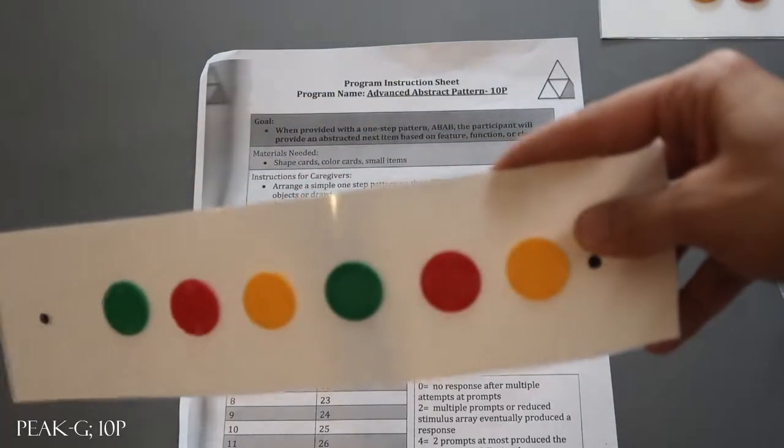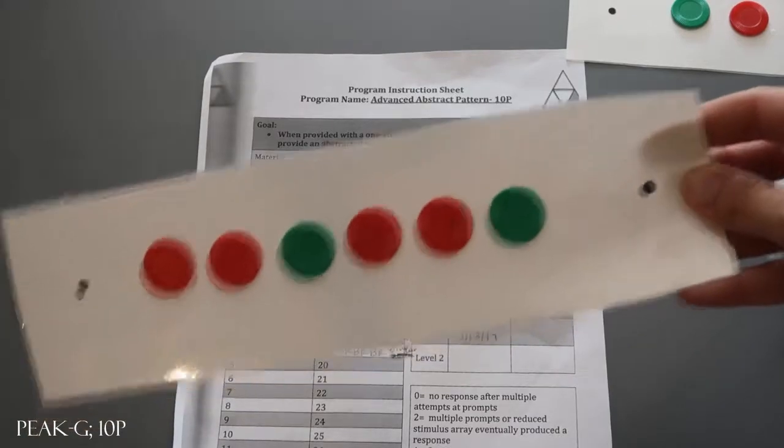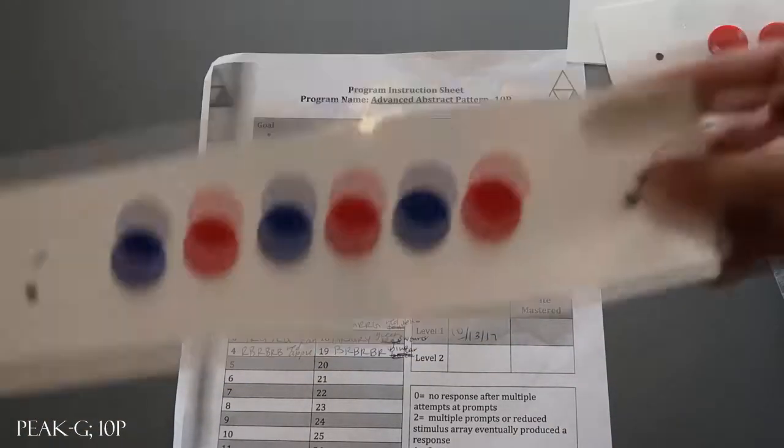Same thing for this strip, it's just a different ABC pattern with green, red, and yellow. Another one there and then the fourth.